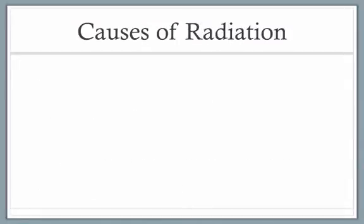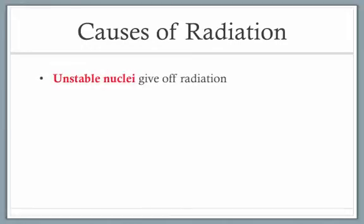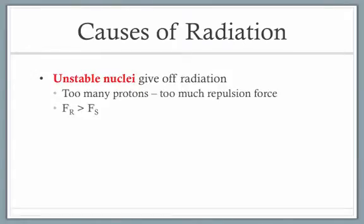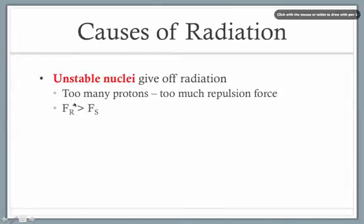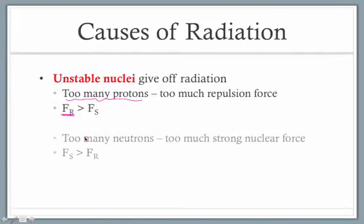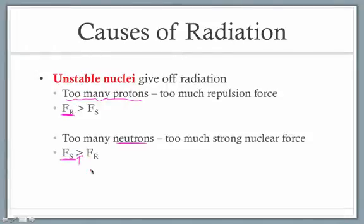Let's review quickly some causes of radiation. Why do certain atoms give off radiation whereas others do not? Unstable nuclei are the ones that give off radiation. Why would a particular nucleus be unstable? It's about the balance of the number of protons to the number of neutrons. Too many protons is a particular type of instability, resulting in too much repulsion force. Too many neutrons is going to result in too much strong force, and as a result, we're going to get an imbalance in our two forces and net instability in our nucleus.